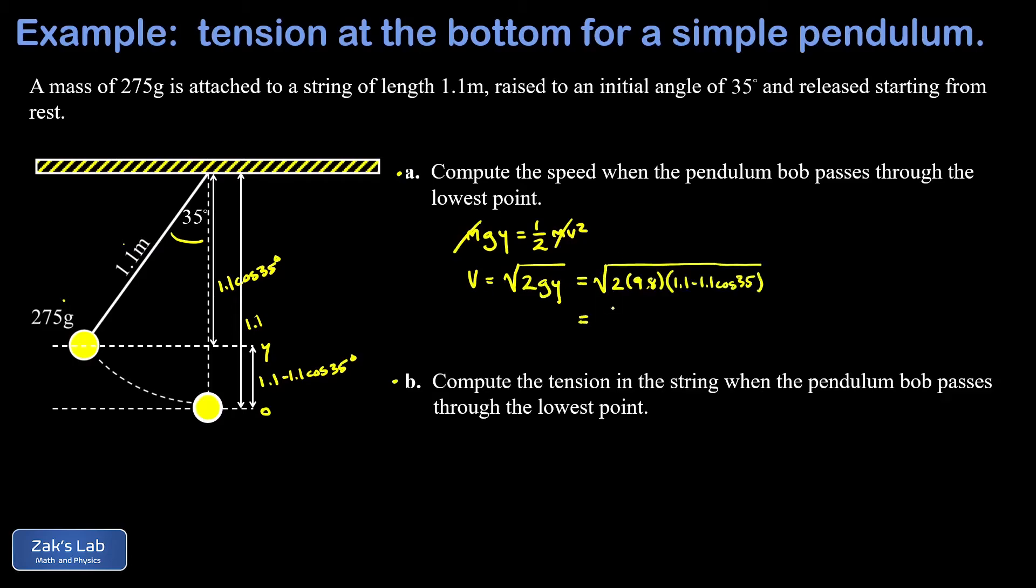Plugging in g and y, we get the square root of 2 times 9.8 times the quantity 1.1 minus 1.1 cosine 35. And when we run the numbers on this, we get a speed of 1.97 meters per second.